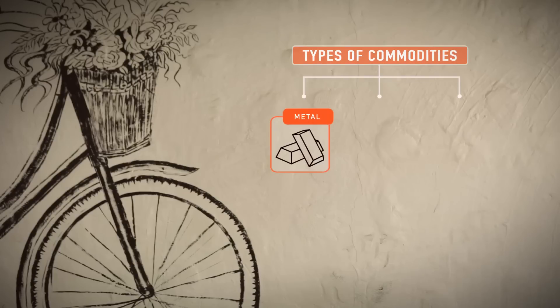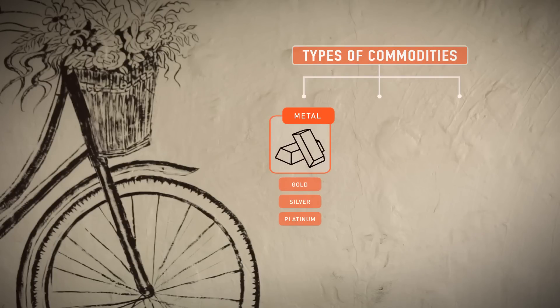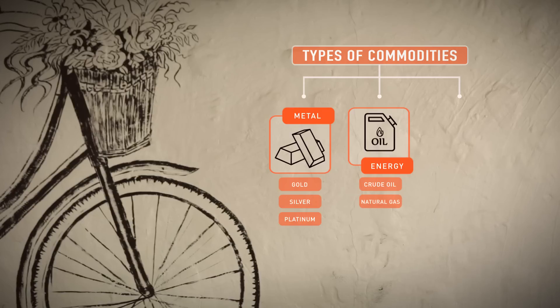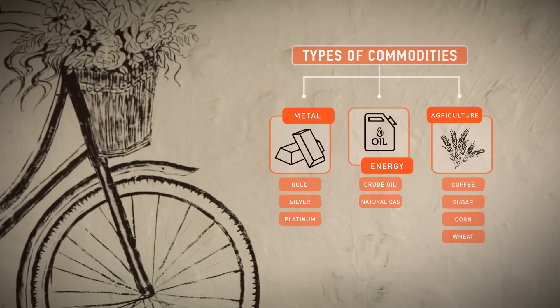But apart from being a currency, did you know gold is also a commodity? A commodity is basically a natural asset which can be grown, mined, or extracted from the earth. You can invest in a range of other commodities to hedge against inflation and diversify your portfolio. There are three broad categories: metals — precious metals like gold, silver, platinum, or industrial metals like aluminium and copper; energy — crude oil or natural gas; and agriculture — edible crops like coffee, sugar, corn, wheat, or materials like cotton and jute.